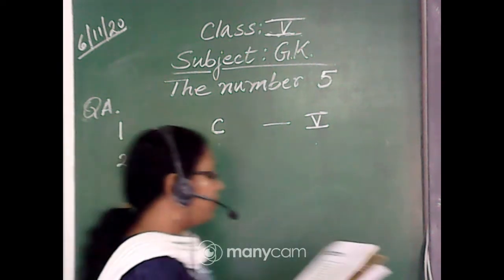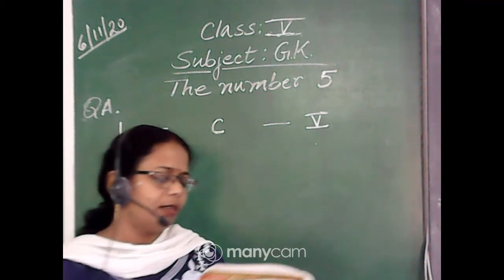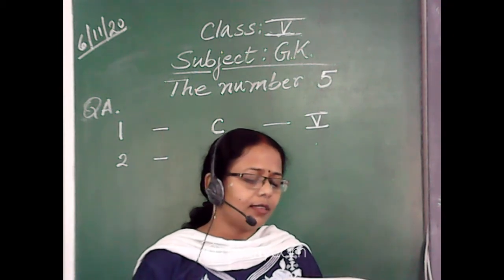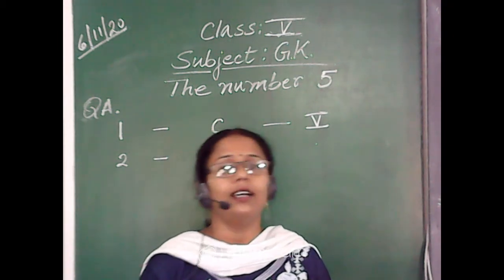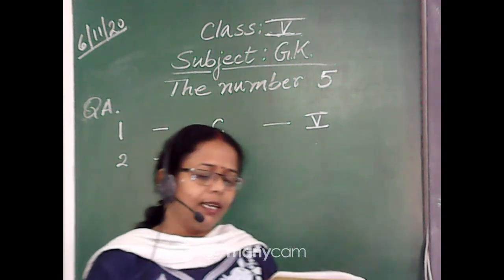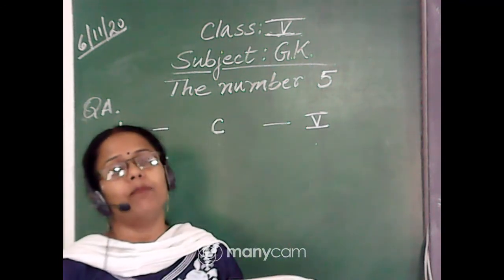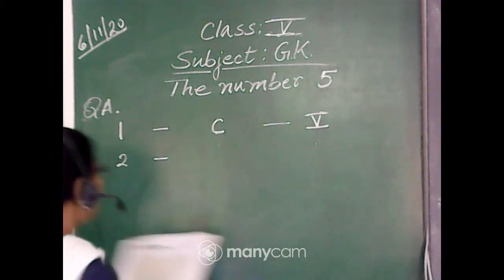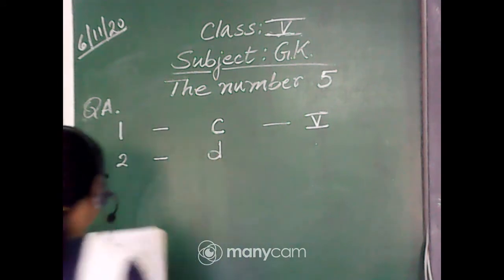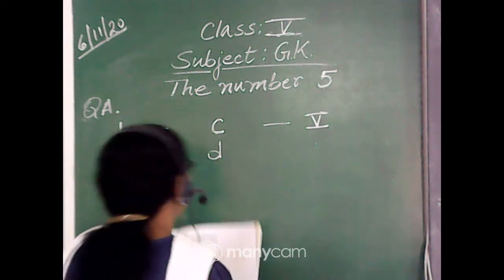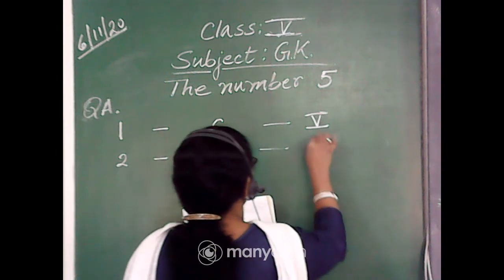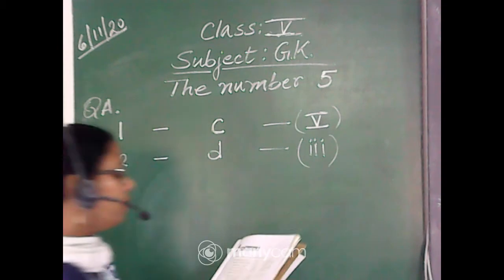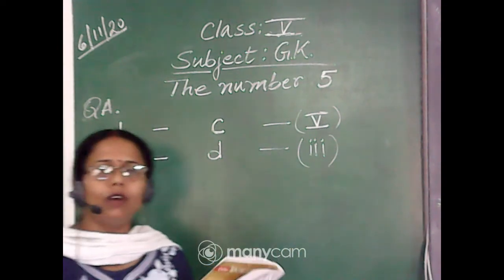Number 2: the Shahada, the Salat, Zakat, Sawm and Hajj. These are matched with D — the 5 pillars of Islam. And the religion is Islam, which is Roman numeral 3.